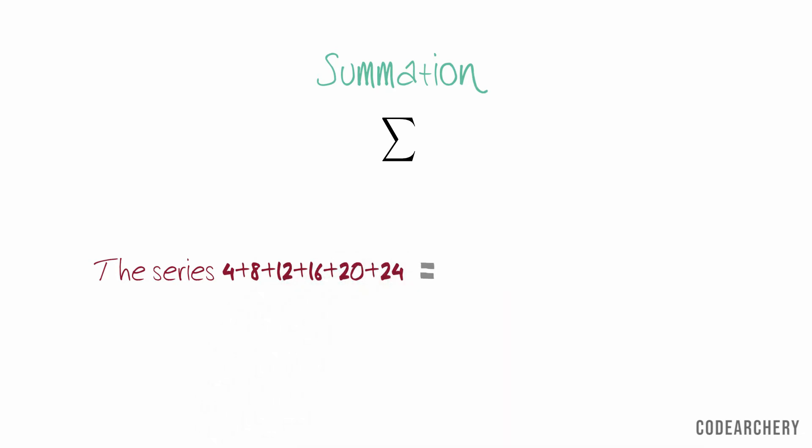For example the series 4 plus 8 plus 12 up to 24 can be written as summation of 4n as n goes from 1 to 6. This means that the series starts at n equals 1 and we stop at n equals 6.